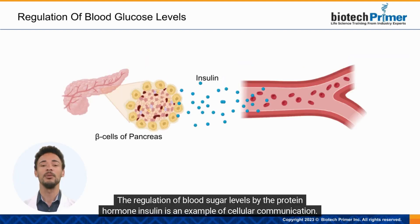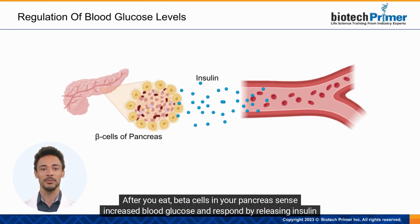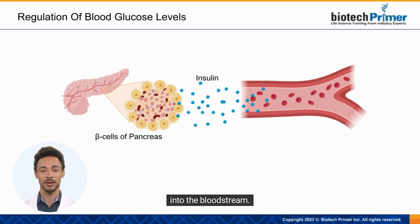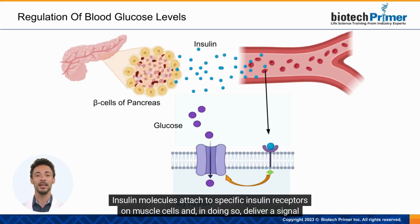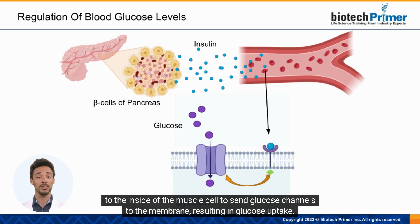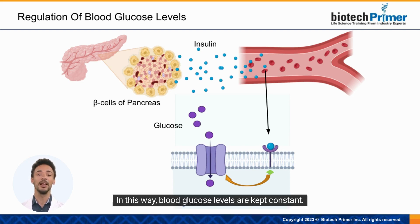The regulation of blood sugar levels by the protein hormone insulin is an example of cellular communication. After you eat, beta cells in your pancreas sense increased blood glucose and respond by releasing insulin into the bloodstream. Insulin molecules attach to specific insulin receptors on muscle cells, delivering a signal to send glucose channels to the membrane, resulting in glucose uptake and keeping blood glucose levels constant.